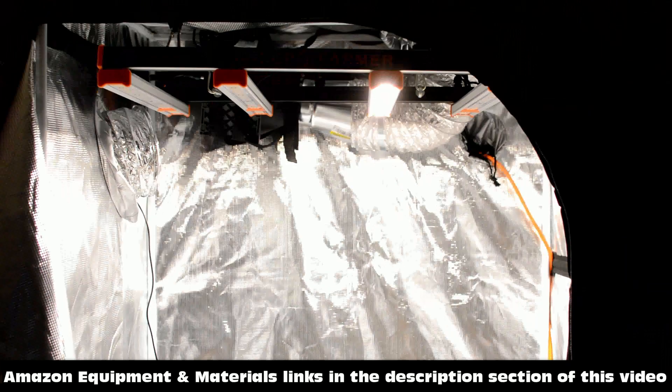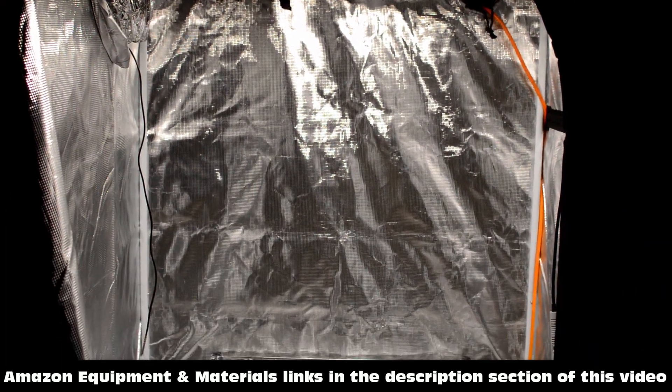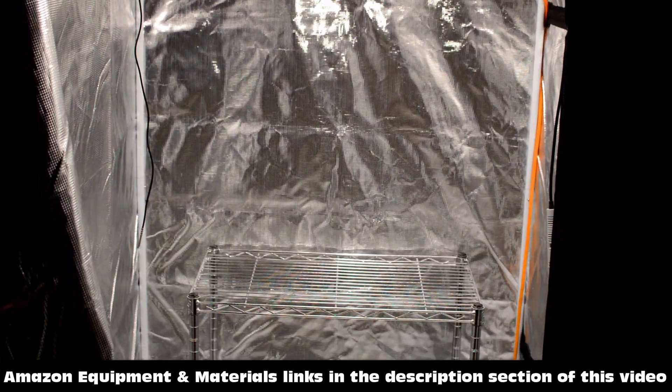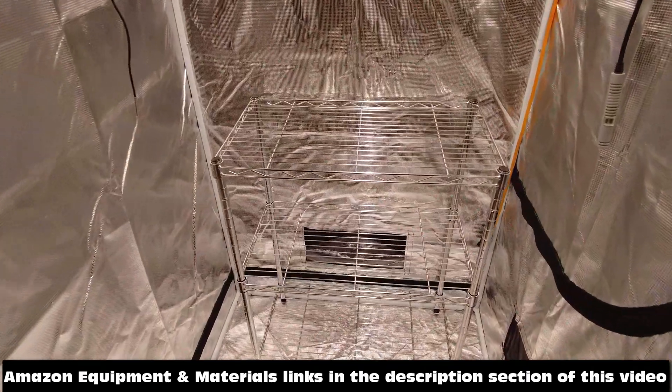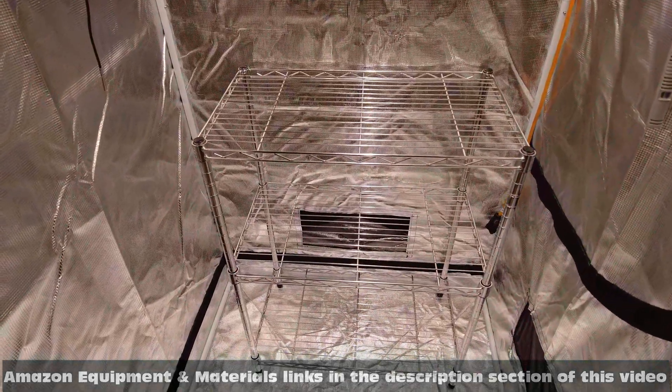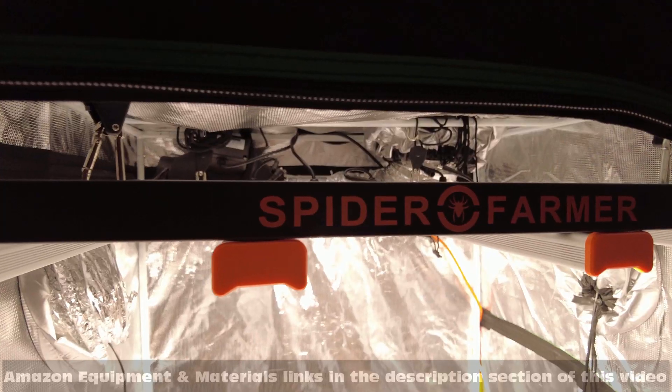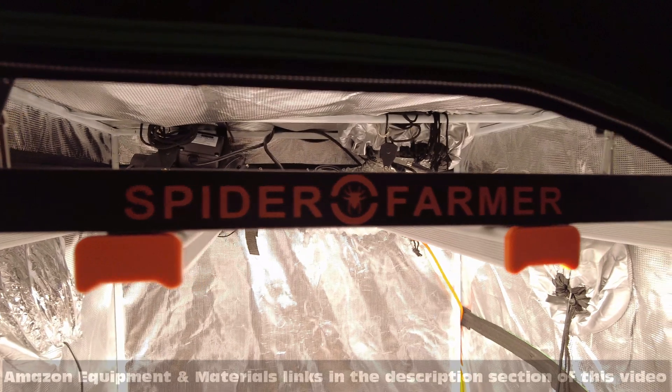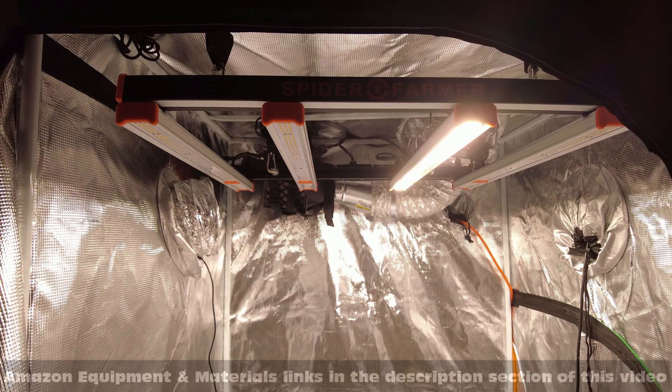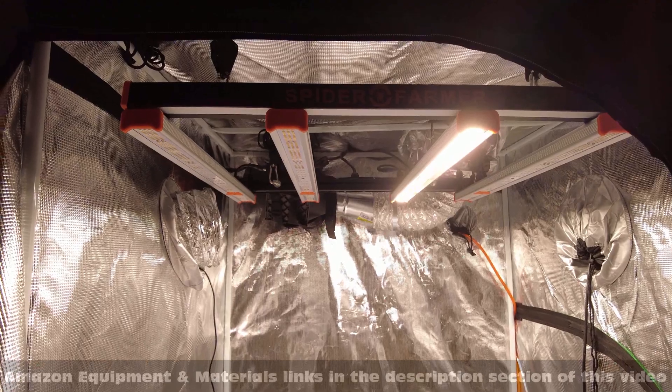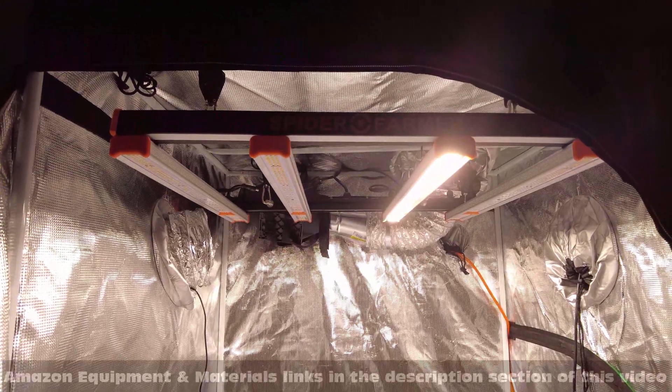I had a brand new 3x3 grow tent laying around, so I'm gonna use this as my fruiting chamber. Mushrooms are gonna sit on this stainless steel wire shelf. I'm hoping that the stainless steel material prevents corrosion and also discourages bacterial growth. I had a brand new LED grow light laying around and I decided to hang this up as a light source, but this light is way too powerful for what I'm doing. So I've disconnected all but one light bar and I'm running it at its lowest setting.